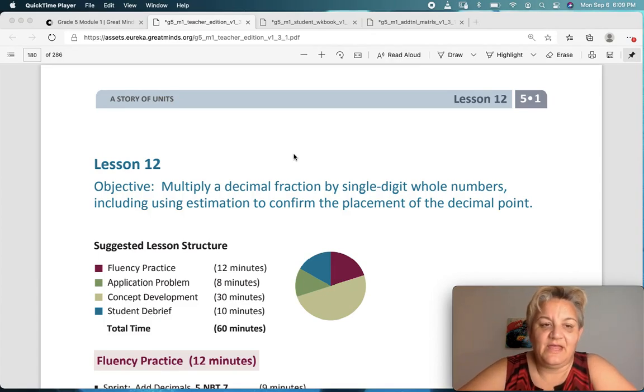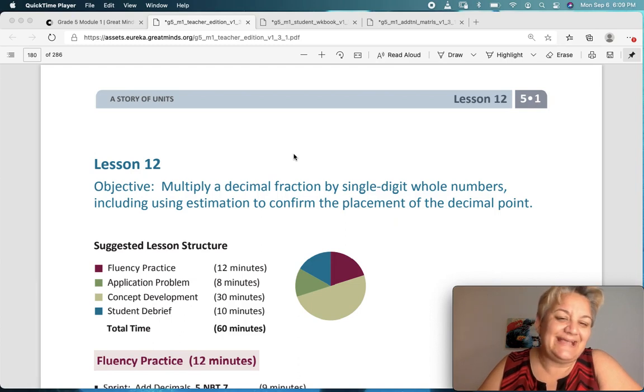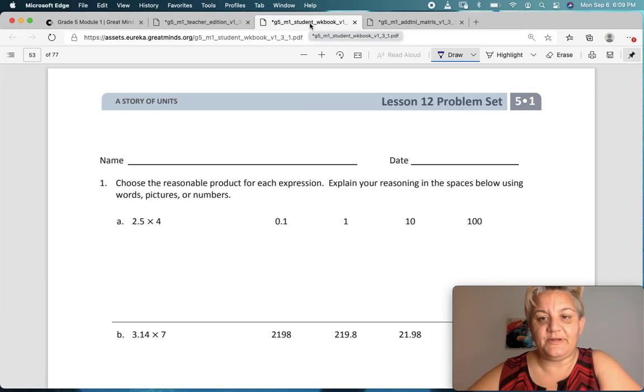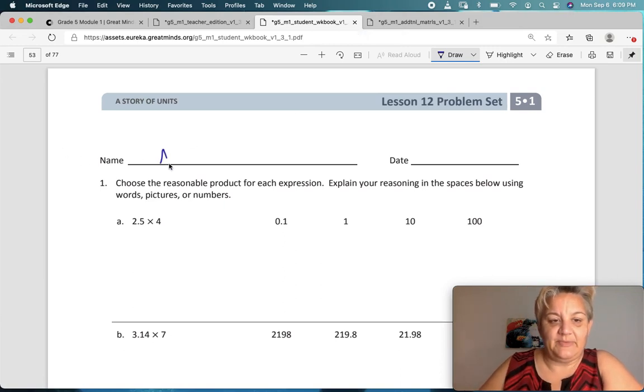Hey graders, this is Eureka Math, and we are in Unit 1, Lesson 12. Our objective today is to multiply a decimal fraction by a single-digit whole number, including using estimation to confirm the placement of the decimal point. If you're sometimes doing multiplication with decimals and you don't know where that decimal point should go, we're going to use some estimation to help you. So let's go straight to our learn book and write your name on your page.